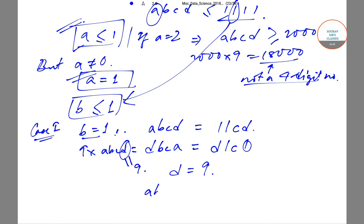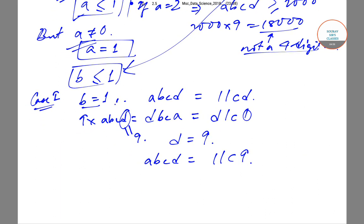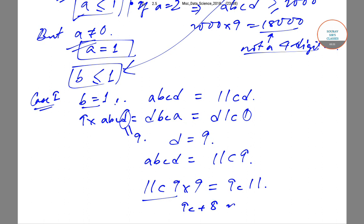If D is equal to 9, our ABCD looks like 11C9. Now if we multiply 11C9 by 9, we get DCBA which should be 9C11. So upon multiplication, 9×9 gives 81, the 1 comes in the units place and 8 carries over to 9C, giving 9C + 8.